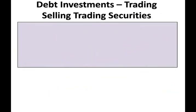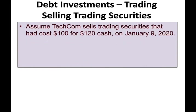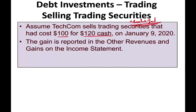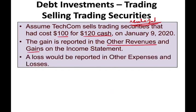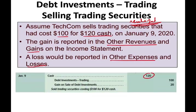Sometimes we will sell those trading securities. Assume Techcom sells trading securities with a cost of $100 for $120 in cash. Since we sold them for $120, we have a realized gain of $20, reported in the other revenues and gains section of the income statement. A loss would be reported in other expenses and losses. The journal entry: debit cash $120, credit debt investment $100, credit gain on sale $20.